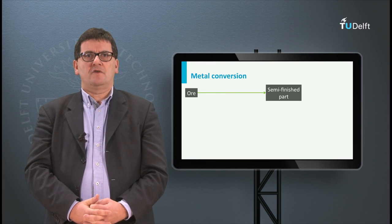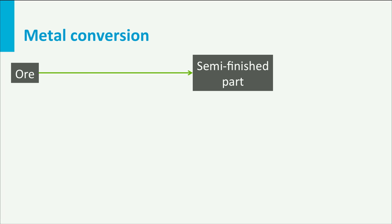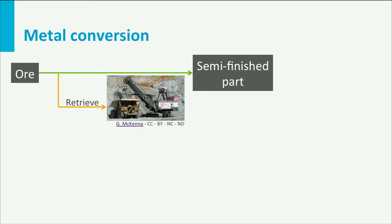Let's start with the group of metals. Metals can be found in the crust of the earth, so mining activities are applied to retrieve these so-called ores. These ores, like iron ore or bauxite, are transported to factories where the metal is separated from rock, sand, or other substances. We call these processes a blast furnace in case of iron ore and electrolysis in case of bauxite.